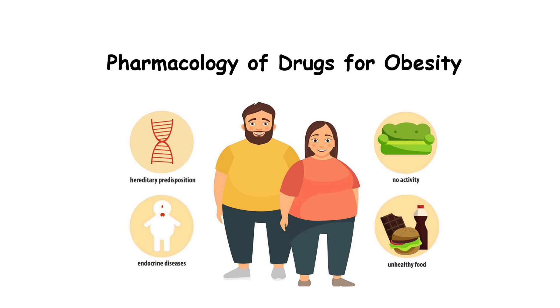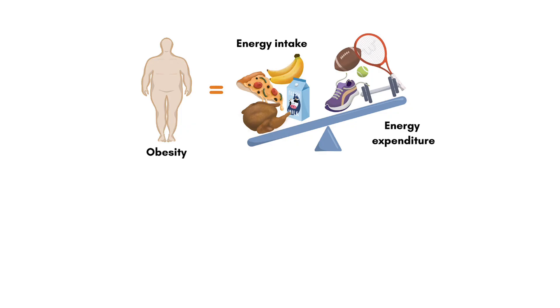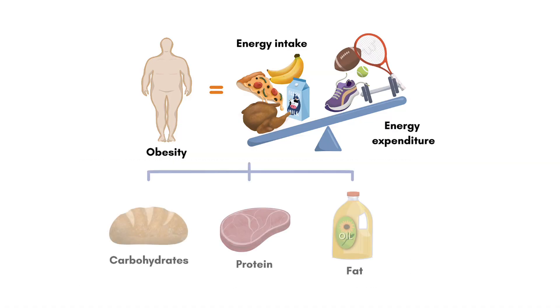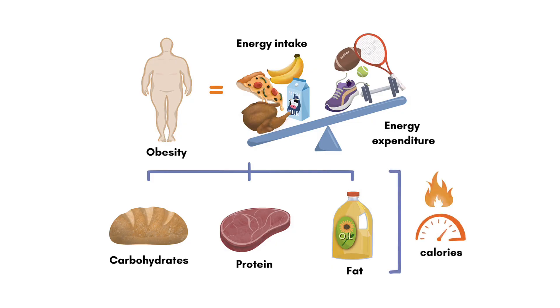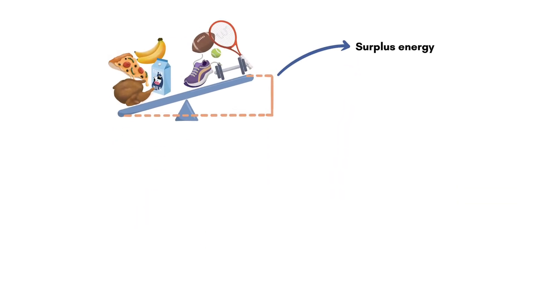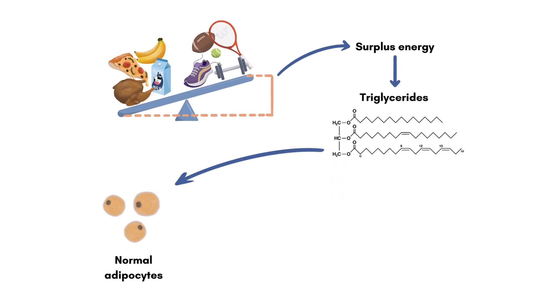Obesity occurs when there is an imbalance between energy intake and energy expenditure, leading to the excessive accumulation of body fat. The process starts with the consumption of food, which is broken down into its basic components, such as carbohydrates, proteins, and fats. These macronutrients provide the body with energy in the form of calories. When energy intake exceeds energy expenditure, the surplus energy is stored as triglycerides in adipocytes, the fat-storing cells.